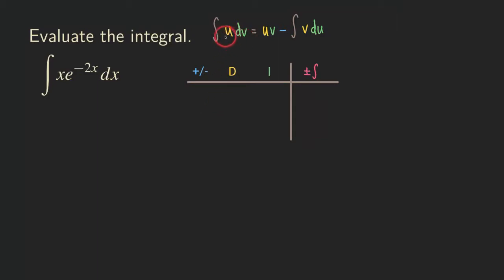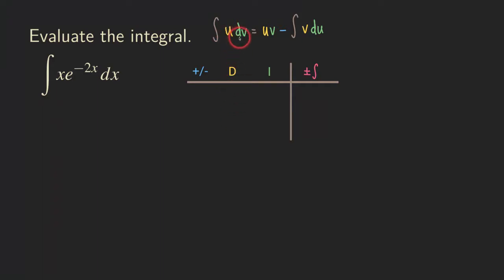What we have is that we are trying to find this integral. To find this integral, we actually need to choose a u so that we have something we are going to differentiate. And there is also a dv, which is something that we are going to integrate.